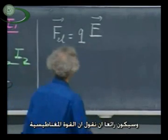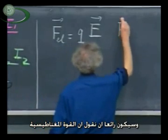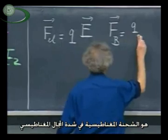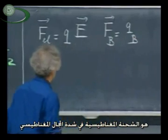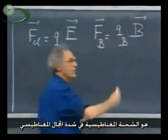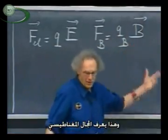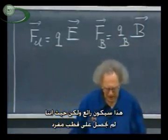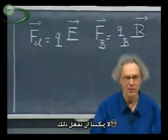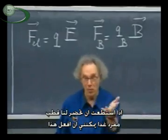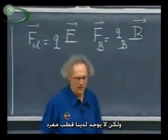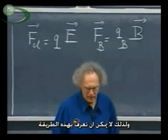Wouldn't it be nice if we could now say the magnetic force is a magnetic charge times the B field? That would define the magnitude of the B field. But as long as we haven't found a magnetic monopole, we can't do it. If you come with a magnetic monopole tomorrow, I can do this. But we have no magnetic monopoles, and so it cannot be done this way.